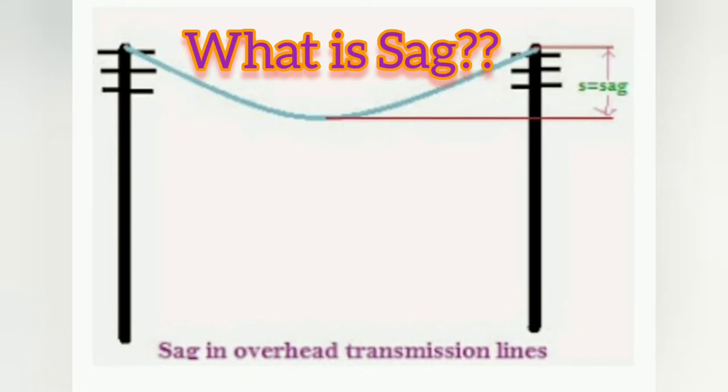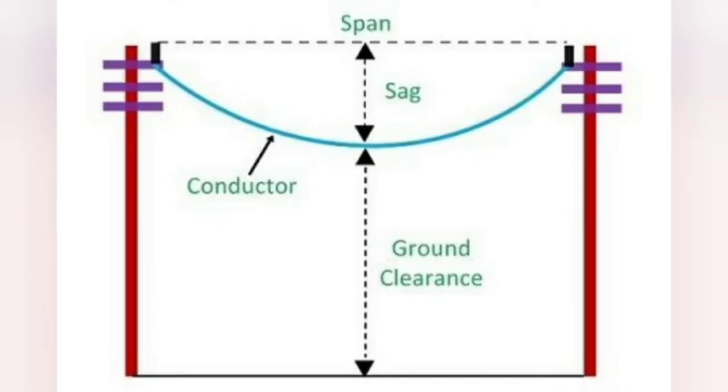First question is what is sag? For safety purposes, the ground clearance of the conductors at maximum temperature and minimum loading condition should be maintained. So the analysis of the sag and tension is important in transmission line for the continuity and quality of electrical services.